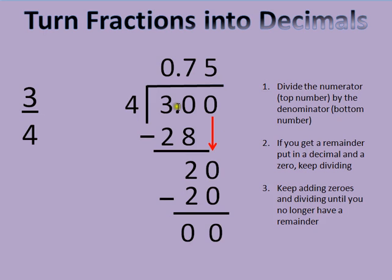So I keep adding zeros until I no longer have a remainder. There's nothing left over here. So I know that three over four, or three-fourths, the decimal is seventy-five one-hundredths, or zero point seven-five. Now, that's how I turn fractions into decimals.